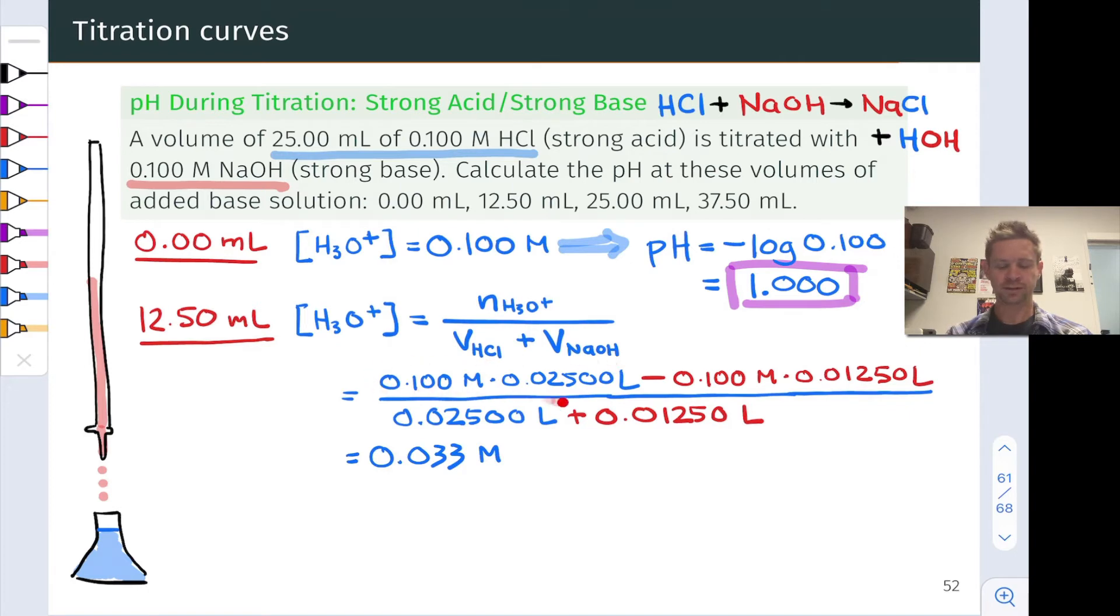What moles of hydronium are present at this point? It's the moles we started with minus the amount consumed. We subtract the amount of hydroxide added: 0.1 molar hydroxide times the volume added. This is equivalent to the amount of hydronium consumed. We subtract that from the initial total number of moles of HCl, 0.1 mole per liter times 25 milliliters. We get 0.033 moles per liter hydronium concentration. We apply the definition of pH, and the pH has increased a little bit to 1.478.